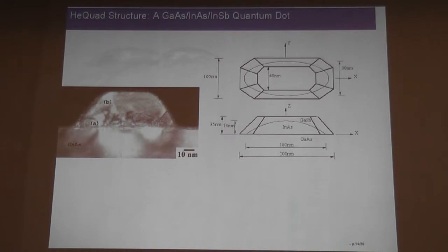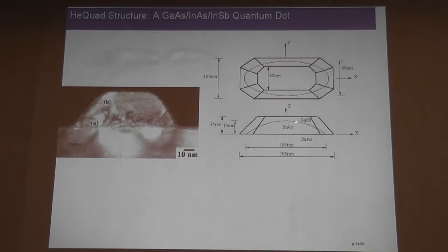Most of testing has been done on what we call lens-shaped quantum dots, experimentally grown by our collaborators. You have a gallium arsenide substrate, an indium arsenide quantum dot, and either gallium arsenide or indium arsenide cap over there. These experimentally grown quantum dots have been used as a sort of testing ground for the things that we do in the model.